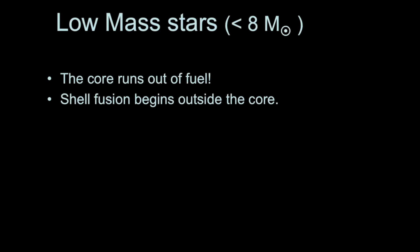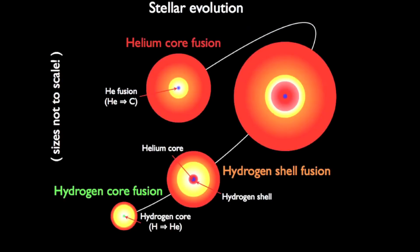When a low mass star's core runs out of fuel in the main sequence stage, it has turned all of its core hydrogen into helium. During the red giant stage that helium core collapses, and a shell around the core generates hydrogen fusion, which expands the outer layers into the red giant star. This was covered in a previous video.